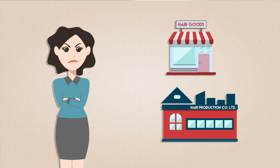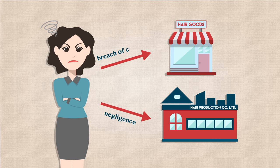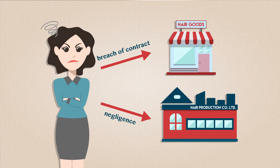Susan was injured when the hairdryer she was using caught fire. She decided to sue both the retailer, Hair Goods, and the manufacturer of the hairdryer, Hair Production Company. Based on this fact pattern it seems logical to divide the answer into two parts, each focusing on a different action — negligence and breach of contract. Each of these actions pits the plaintiff Susan against a different potential defendant and each action raises different legal issues and a different set of rules that you'll have to apply to the facts before you can reach a conclusion.